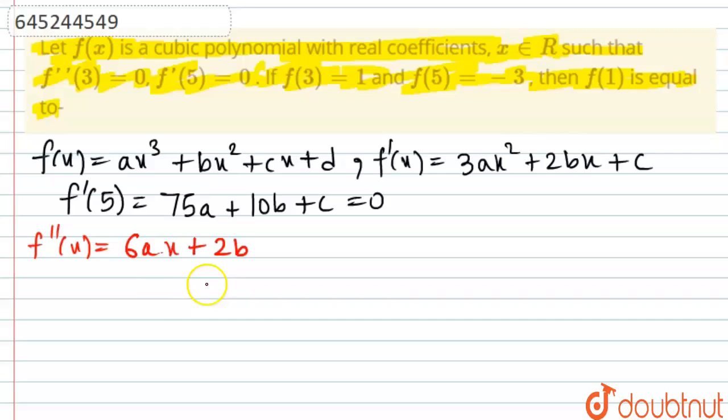So now this is f''(x). Now it is given that f''(3) is zero, so this is going to imply that 18a + 2b = 0, which is implying that 2b = -18a.